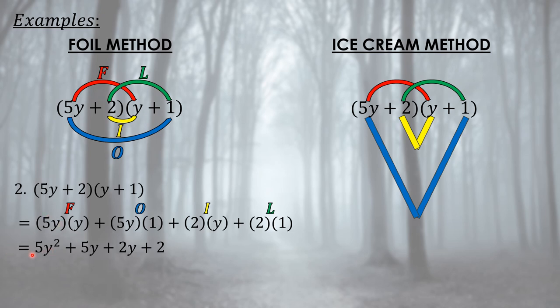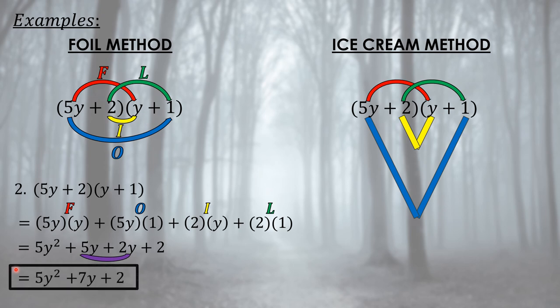Simplifying: 5y times y = 5y squared; 5y times 1 = 5y; 2 times y = 2y; 2 times 1 = 2. We have like terms: positive 5y and positive 2y. Since both are positive, we add: 5 + 2 = 7. The final answer is 5y squared plus 7y plus 2.